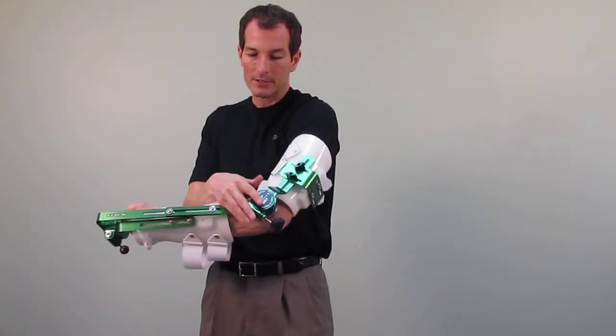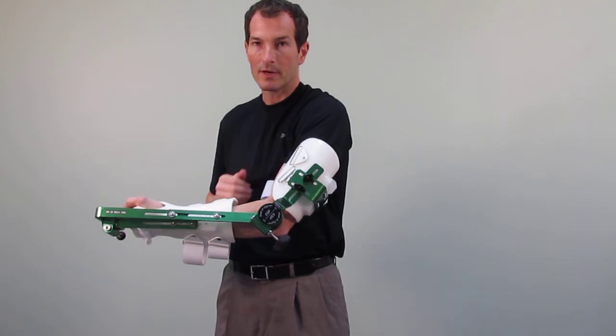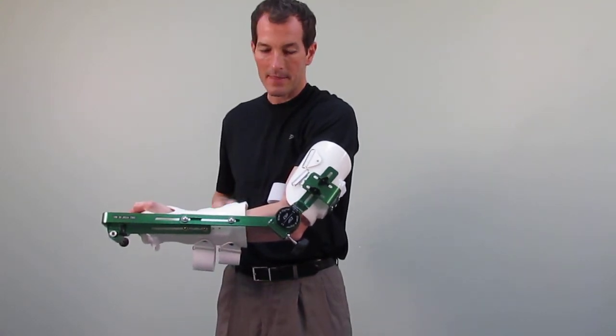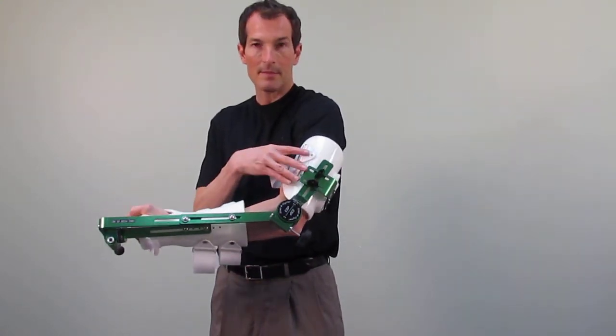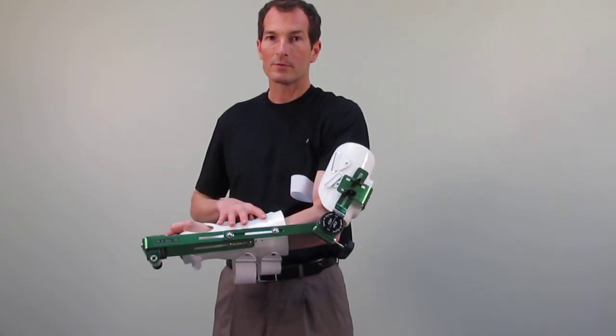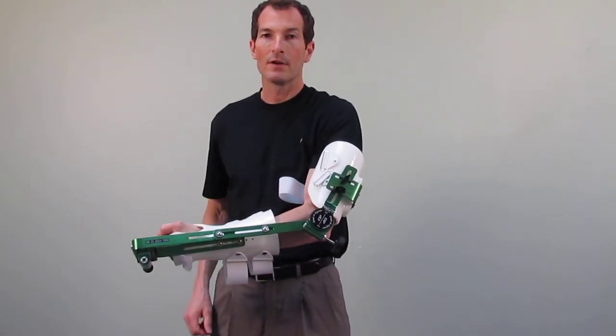The elbow hinge should align with the elbow joint appropriately and then the proximal straps may be fastened and then the forearm straps may be fastened in order to utilize the device.